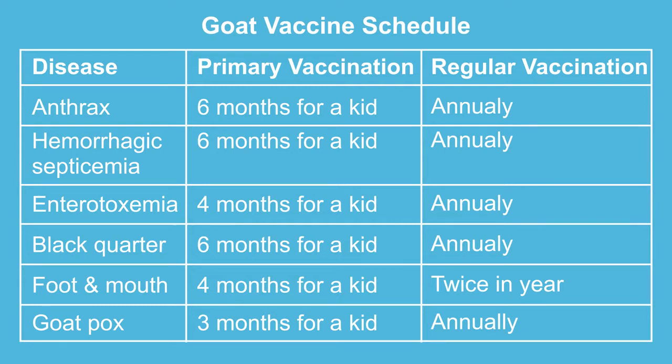The other one is hemorrhagic septicemia, which involves toxins in the blood. For this one, it is administered six months after birth for a kid and it's repeated annually.